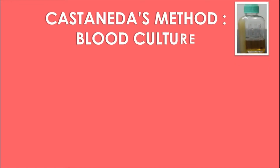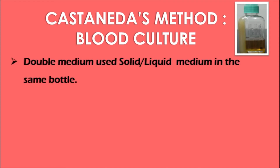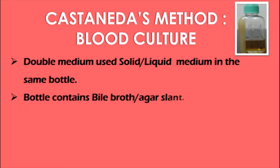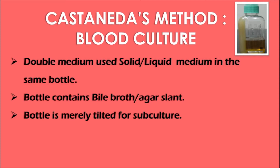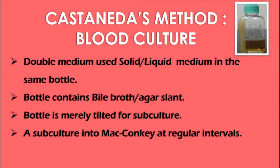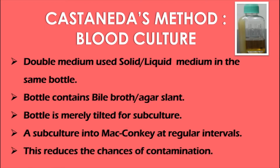One alternative to routine blood culture is Castaneda's method. In this method, a double medium is used — both solid and liquid medium in the same bottle, which we call a biphasic medium. The bottle containing bile broth is inoculated with the blood sample and incubated in the upright position. After incubation, the bottle is tilted and the broth is allowed to flow over the agar surface for subculture. At regular intervals, subculture is also made on MacConkey agar. One major advantage is that this reduces the chances of contamination, since subculturing occurs within the bottle. If growth is present, it is removed and subjected to identification.